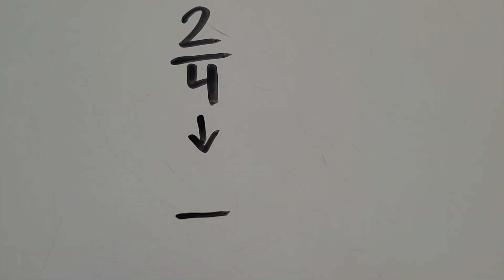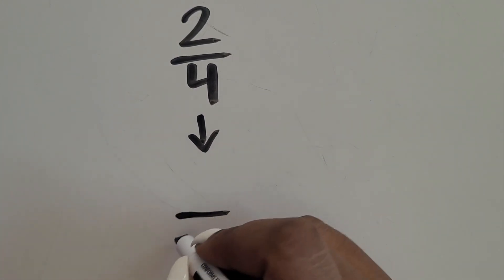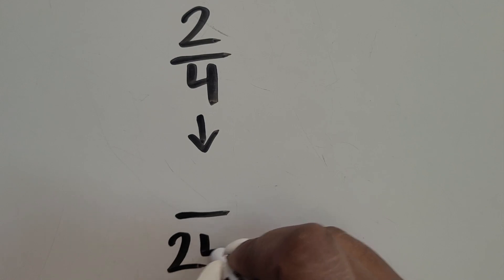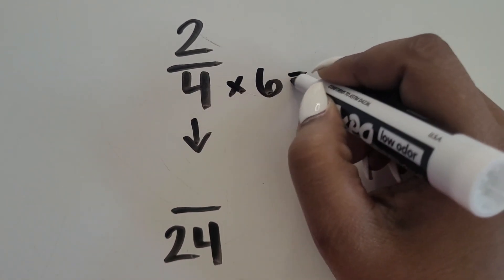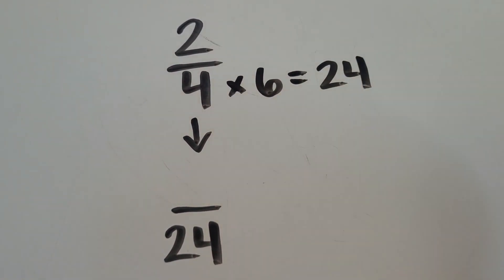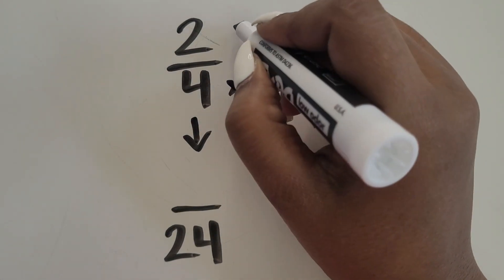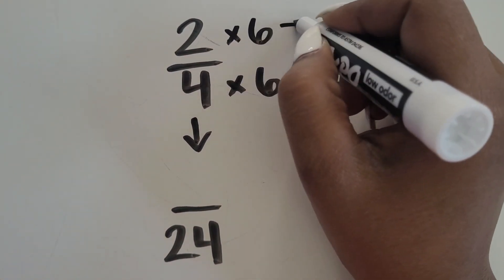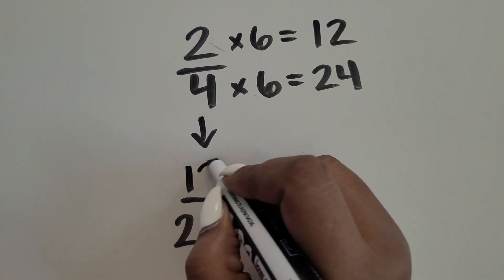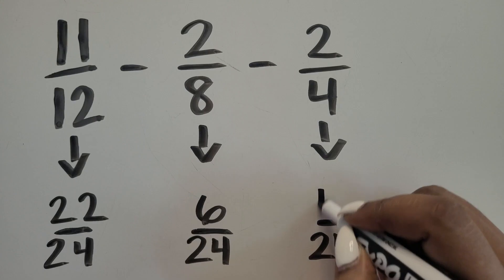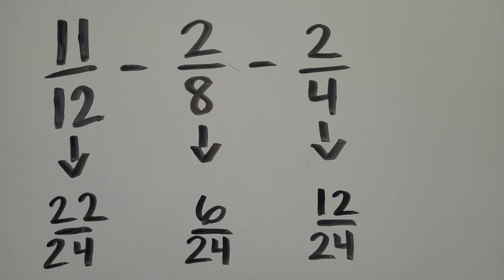Last, let's work on an equivalent fraction for two-fourths. How many groups of 4 equals 24? 6. 6 times 4 equals 24. Let's do the same for the numerator: 6 groups of 2, or 6 times 2, equals 12. An equivalent fraction for two-fourths is 12 twenty-fourths.